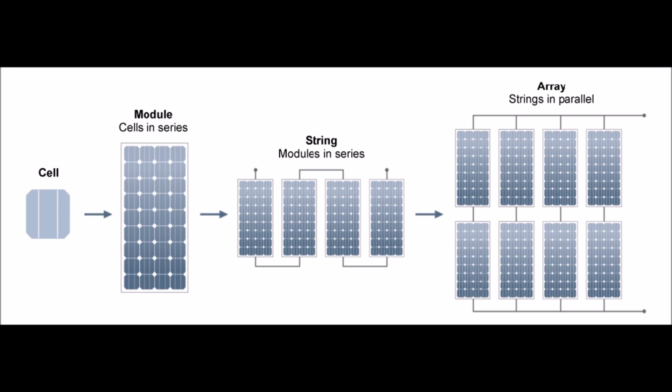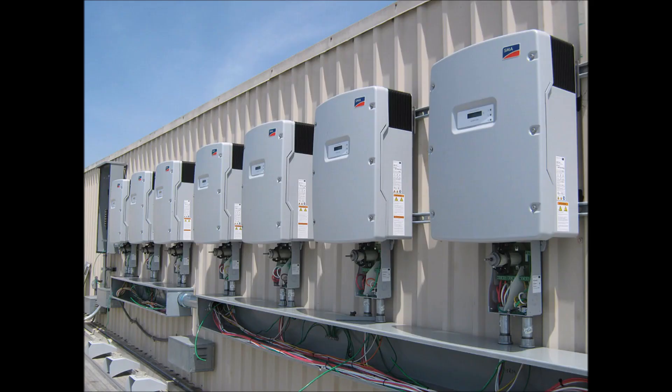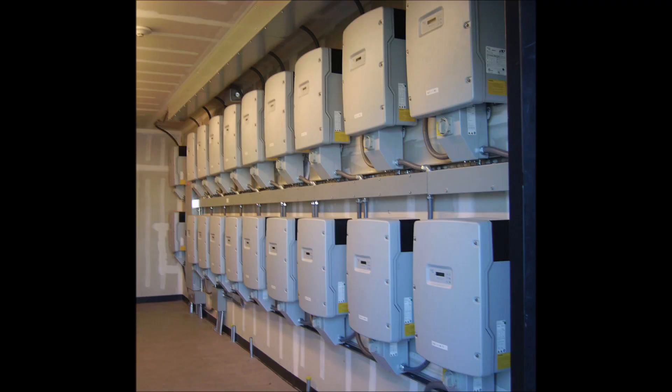First things first, let's talk about what we mean by a string. In solar we have several different units that we give names to. One of them is a string, which is solar panels that are wired in series — basically wired end-to-end in a long string. A string inverter takes all of the DC electricity generated by that string of solar panels and converts it into AC electricity. String inverters also operate at a much higher input voltage because when you wire solar panels in series you are increasing the voltage.